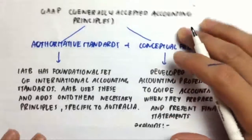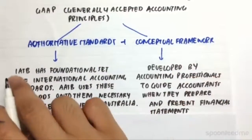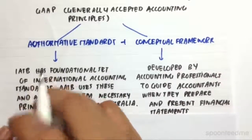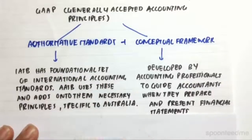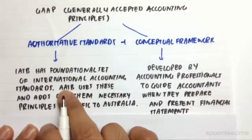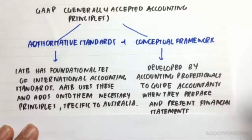So what are authoritative standards? From IASB or the International Accounting Standards Board, they provide a foundational set of international accounting standards. And then AASB or the Australian Accounting Standards Board uses these and adds onto them necessary principles or standards that are specific to Australia.